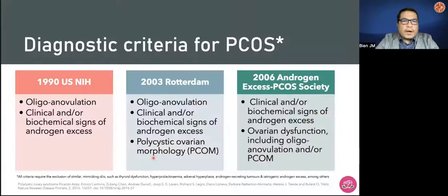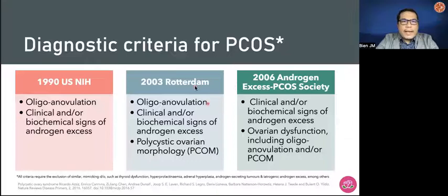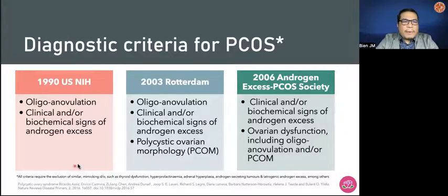Just a short review — these are the ways of diagnosing PCOS. We have the 1990 US NIH diagnosis, the 2003 Rotterdam diagnosis, and the 2006 Androgen Excess PCOS Society criteria. For the Rotterdam criteria, oligo-anovulation, clinical and/or biochemical signs of androgen excess, and polycystic ovarian morphology are part of the diagnostic criteria. All criteria require the exclusion of similar mimicking disorders such as thyroid dysfunction, hyperprolactinemia, adrenal hyperplasia, androgen-secreting tumors, and iatrogenic androgen excess.